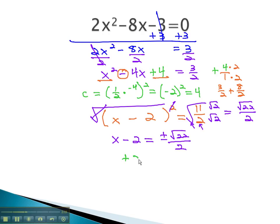To get the x alone, we add 2 to both sides. And we get x = 2 ± √22/2.